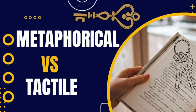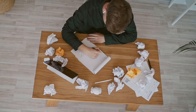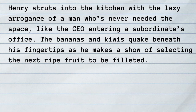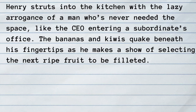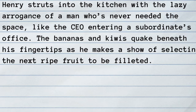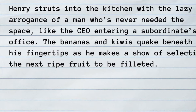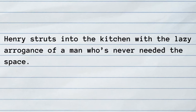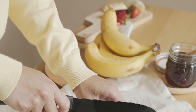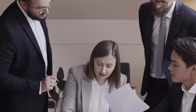Tactile vs. Metaphorical Description: Writers often fall into the trap of thinking that metaphorical description needs to be abstract — that metaphor somehow also equals vague. This belief sours the writing of both poets and novelists alike, because that actually isn't the case at all. Let's return to Henry in his kitchen. Henry struts into the kitchen with the lazy arrogance of a man who's never needed the space, like the CEO entering a subordinate's office. The bananas and kiwis quake beneath his fingertips as he makes a show of selecting the next ripe fruit to be filleted. Can you see how visceral details bring the metaphor to life? Arrogance is an abstract word, but when bananas and kiwis quake like employees, it creates an image in your reader's mind — emphasizing that people and fruit are both terrified to be next on the chopping block.